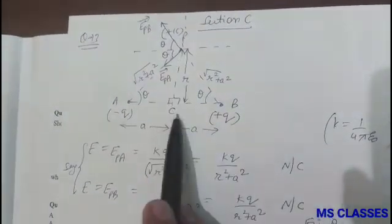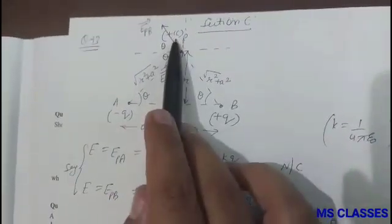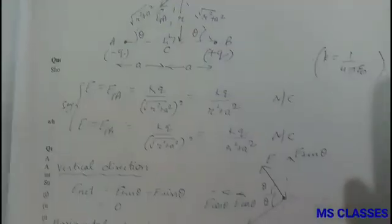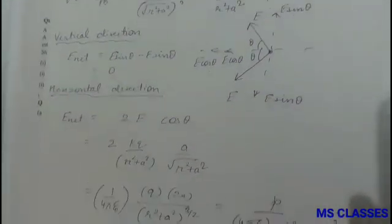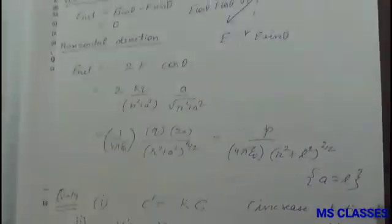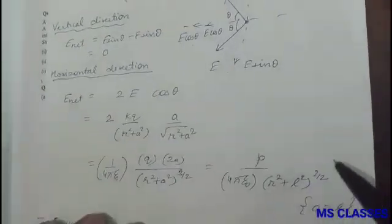So like this you can see we can find the net electric field along vertical and horizontal direction so that the net electric field is coming P upon 4 pi epsilon naught R square plus L square to the power 3 by 2.